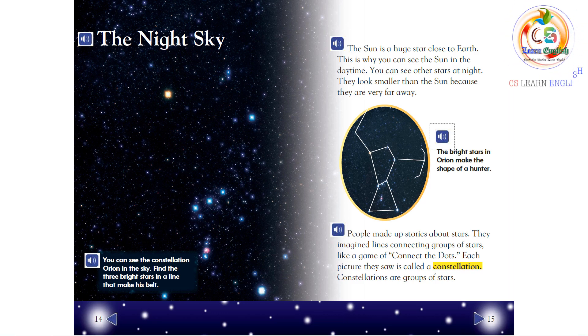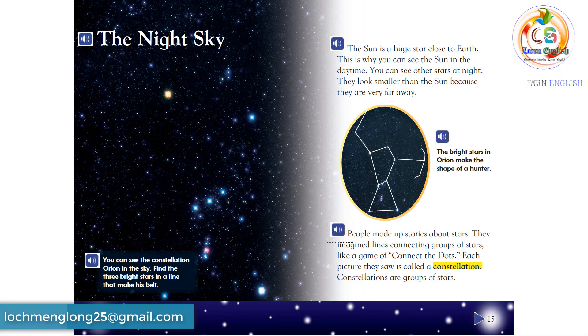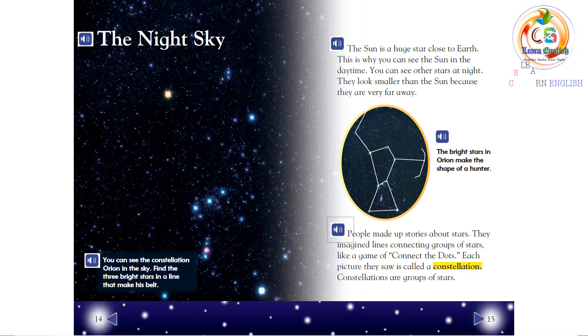The bright stars in Orion make the shape of a hunter. People made up stories about stars. They imagined lines connecting groups of stars like a game of Connect the Dots. Each picture they saw is called a constellation. Constellations are groups of stars.